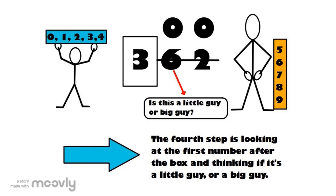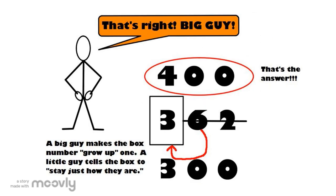The last step is deciding how to round up or down. And to do this step, you're going to need to think about little guy and big guy. In this case, the number behind the box is a six. So, is six a little guy or big guy? That's right. It's a big guy. So, in this case, 362 would round up to 400 because big guy would tell the three to grow up.